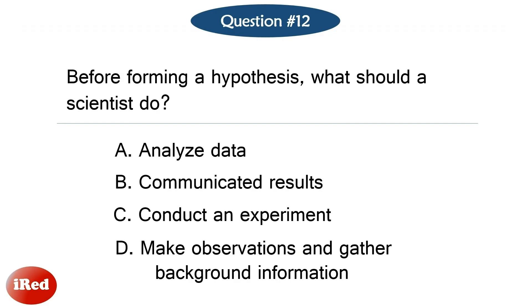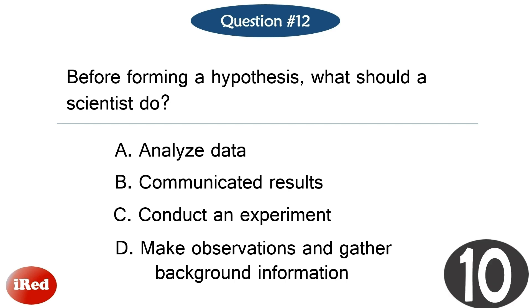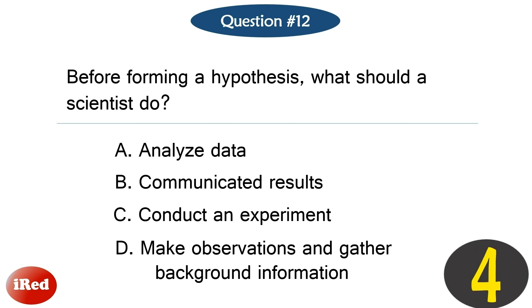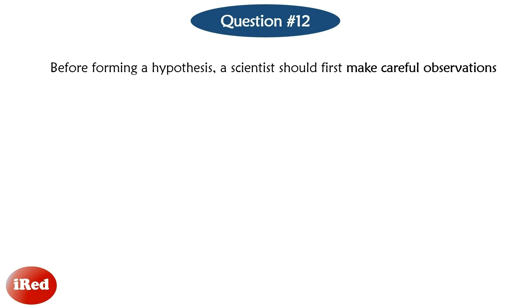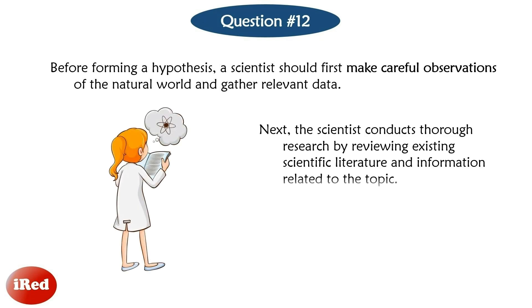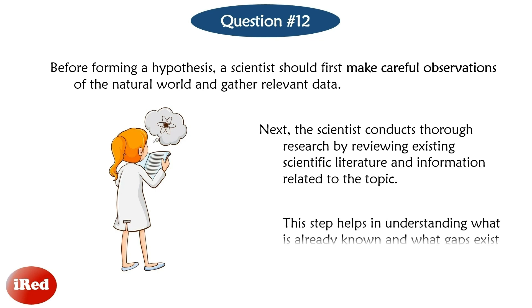Question number 12: Before forming a hypothesis, what should a scientist do? The correct answer is letter D. Before forming a hypothesis, a scientist should first make careful observations of the natural world and gather relevant data. Next, the scientist conducts thorough research by reviewing existing scientific literature and information related to the topic. This step helps in understanding what is already known and what gaps exist in the current knowledge.